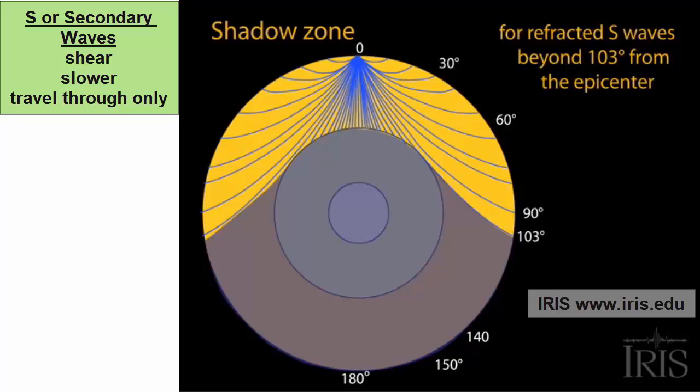S waves are absent from those stations and thus produce a shadow zone. Why? When they cross into the liquid outer core, they get absorbed and can't travel any further.